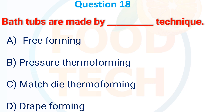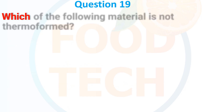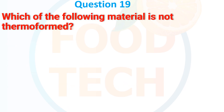Bath tubs are made by which technique? (a) Free flow forming, (b) Pressure thermoforming, (c) Match die thermoforming, (d) Draft forming. The answer is (d) Draft forming.